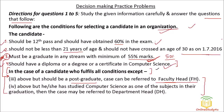Another exception: suppose a candidate fulfills Conditions 1, 2, and 3, but does not have a degree or certificate in computer science. However, if they studied computer science as one of the subjects in their graduation, then the case may be referred to the Department Head. The decision will be pending with the Department Head.